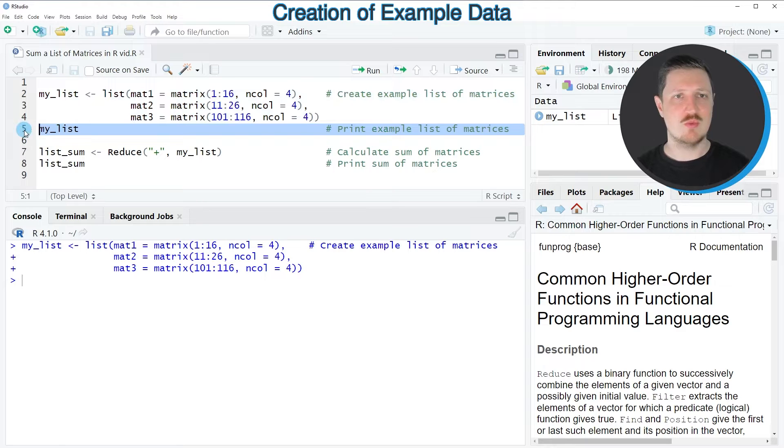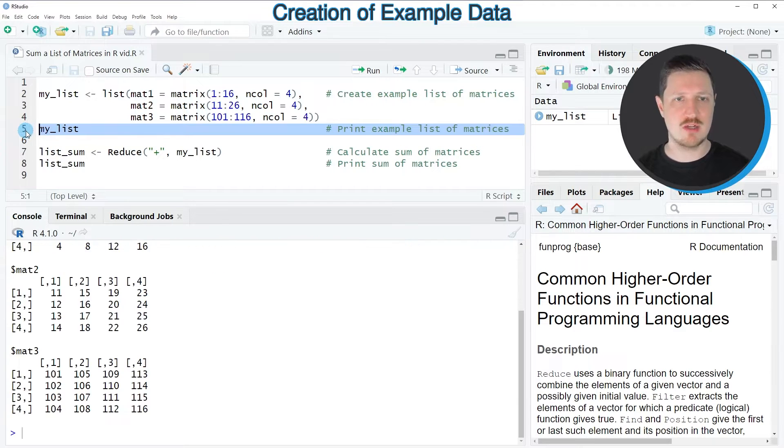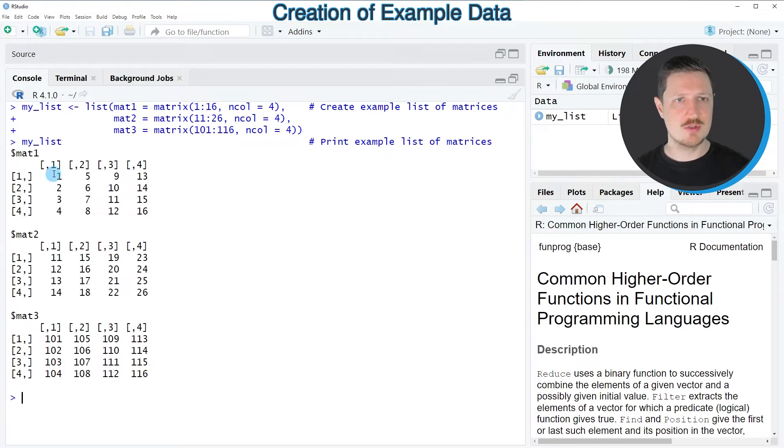After running these lines of code, a new list object is appearing at the top right which is called my_list, and we can print this list to the bottom in the RStudio console by running line 5 of the code. Then you can see at the bottom in the RStudio console that we have created a list object that contains three different matrices.